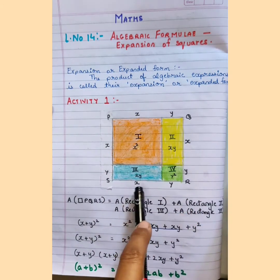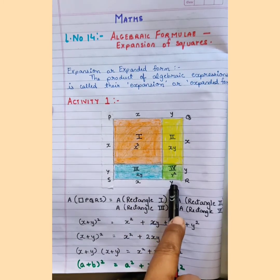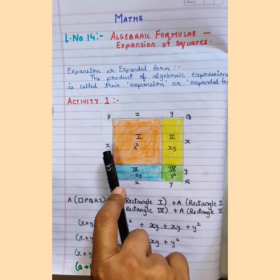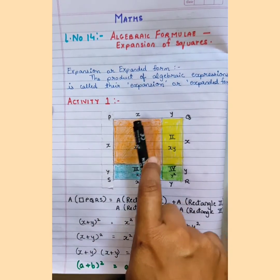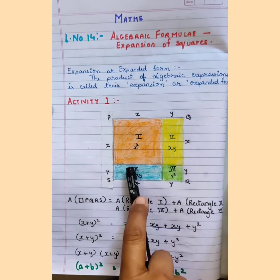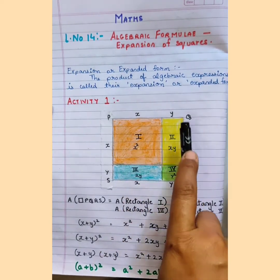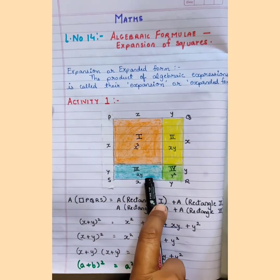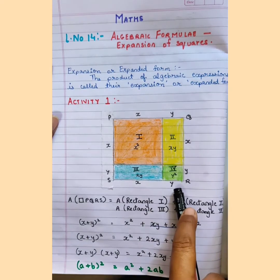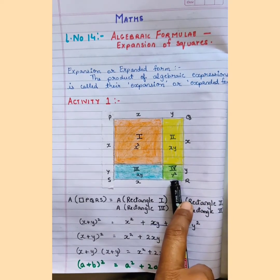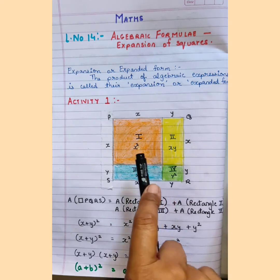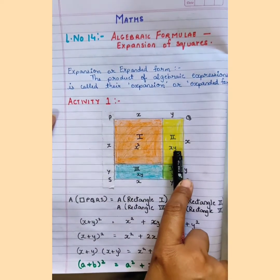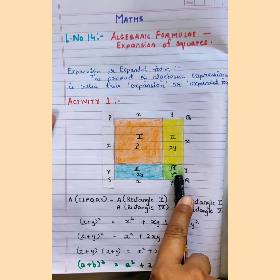Looking at the 4 sides, we have variables X and Y. For the first rectangle, the variable is X and X. When you multiply X by X you get X square. When you multiply X and Y you get XY. Again X and Y when you multiply you get XY. When you multiply Y and Y you get Y square. With these variables we got the area for Rectangle 1, Rectangle 2, Rectangle 3, and Rectangle 4.